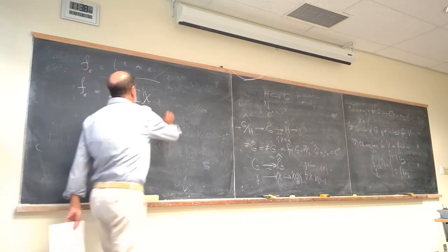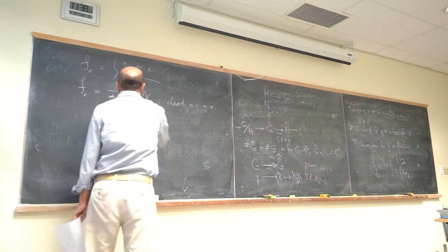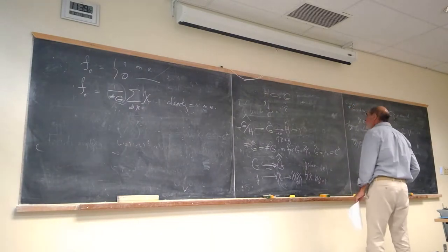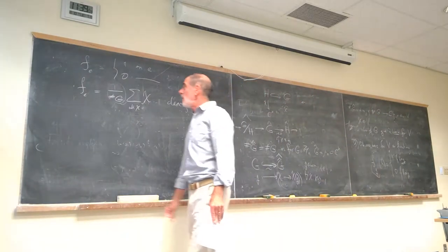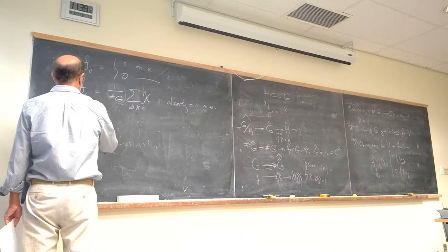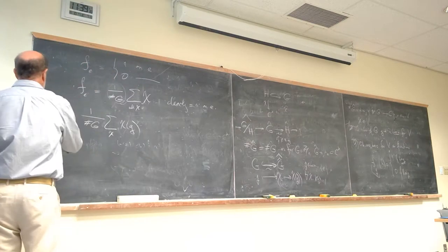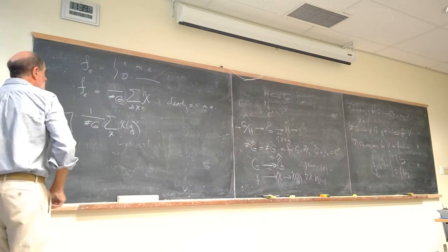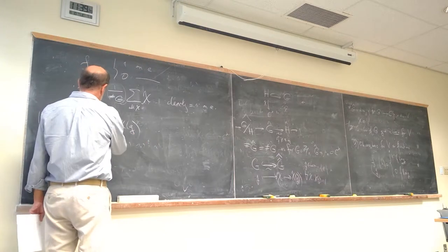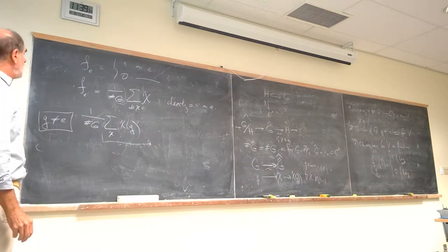What about evaluating (1/|G|) · sum_chi chi(g) for g not equal to the identity? We need to show it's zero — that when we sum all characters of the group over a non-trivial element, we get zero. Since this element is not the identity, we can find a chi' such that chi'(g) ≠ 1, by taking the cyclic subgroup generated by g, constructing a non-trivial character there, and extending to the whole group.